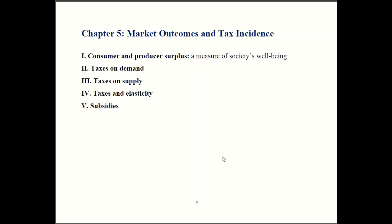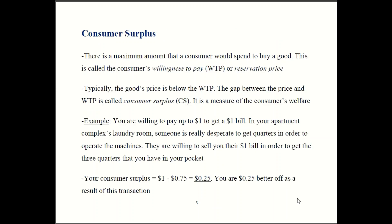So let's get started on consumer and producer surplus. An important idea is that for any good out there the consumer has some maximum willingness to pay for it. This is called the consumer's willingness to pay WTP for short or reservation price.